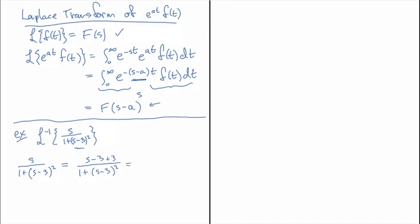And then we can split it up into (s minus 3) over (1 plus (s minus 3) squared), and then add to that 3 times 1 over (1 plus (s minus 3) squared). Okay, so this expression here